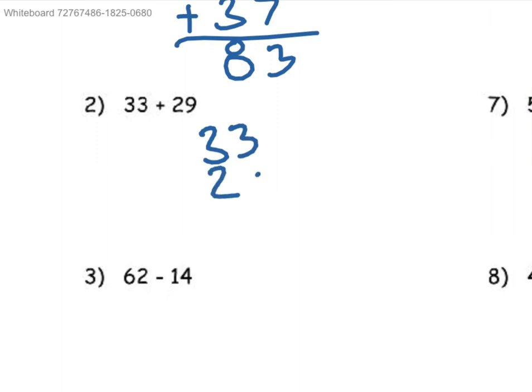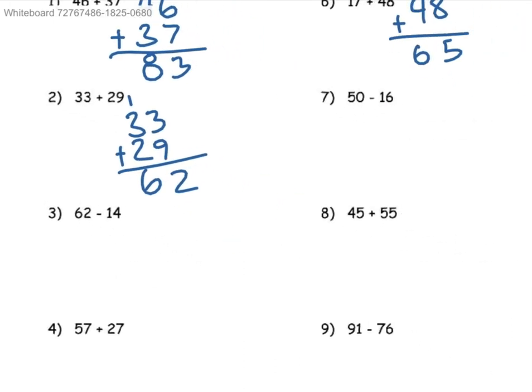33 plus 29. 9 plus 3 is 12, carry the 1. And then 3 plus 1 plus 2 is 6. So we have 62.